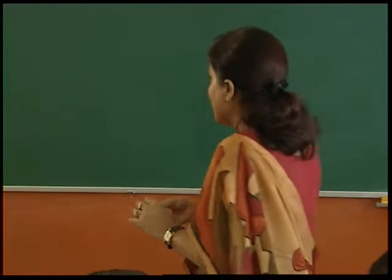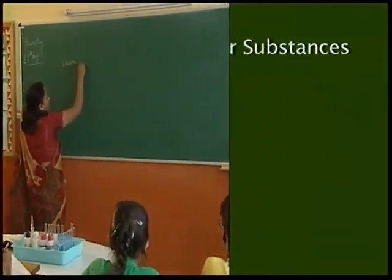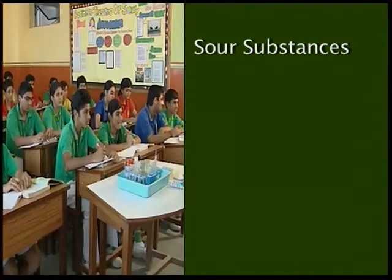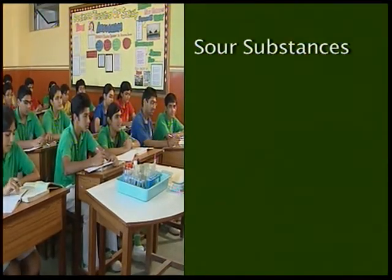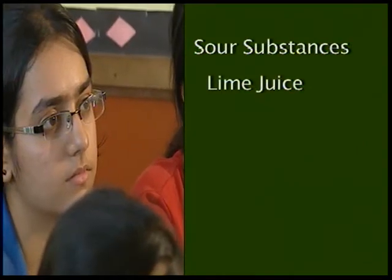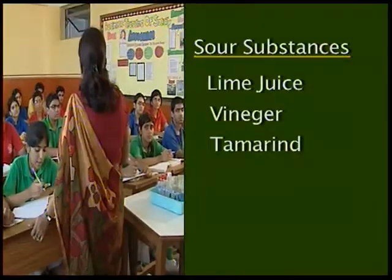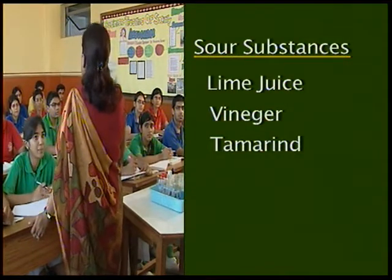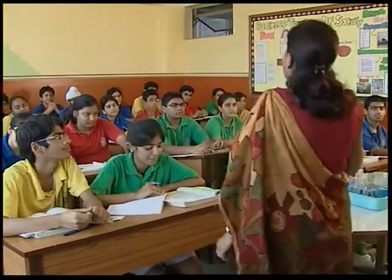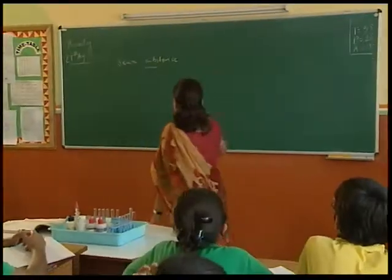Talking about sour substances, give me an example of a naturally occurring substance. Lime juice — that's sour in nature. Then you have tomatoes, all the citrus fruits are sour, and vinegar that we use, tamarind — all these are sour substances. All these substances are sour because they contain something called acids in them.